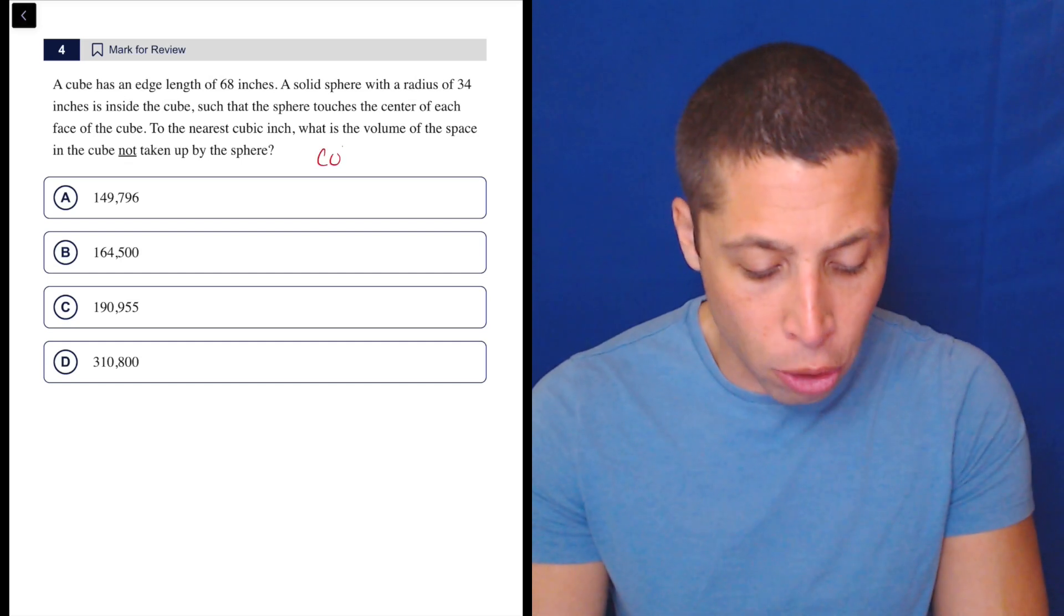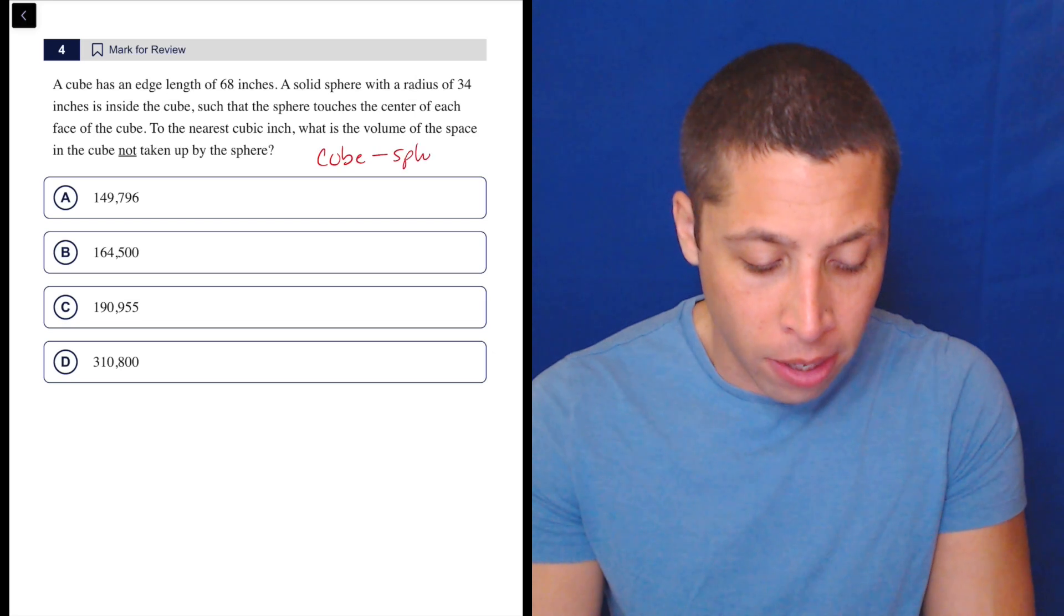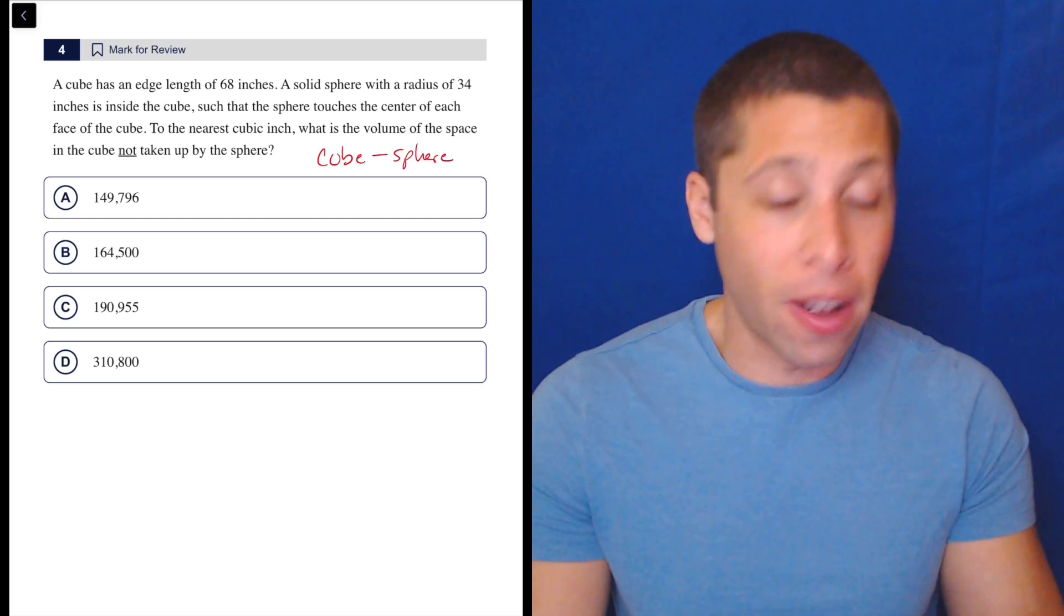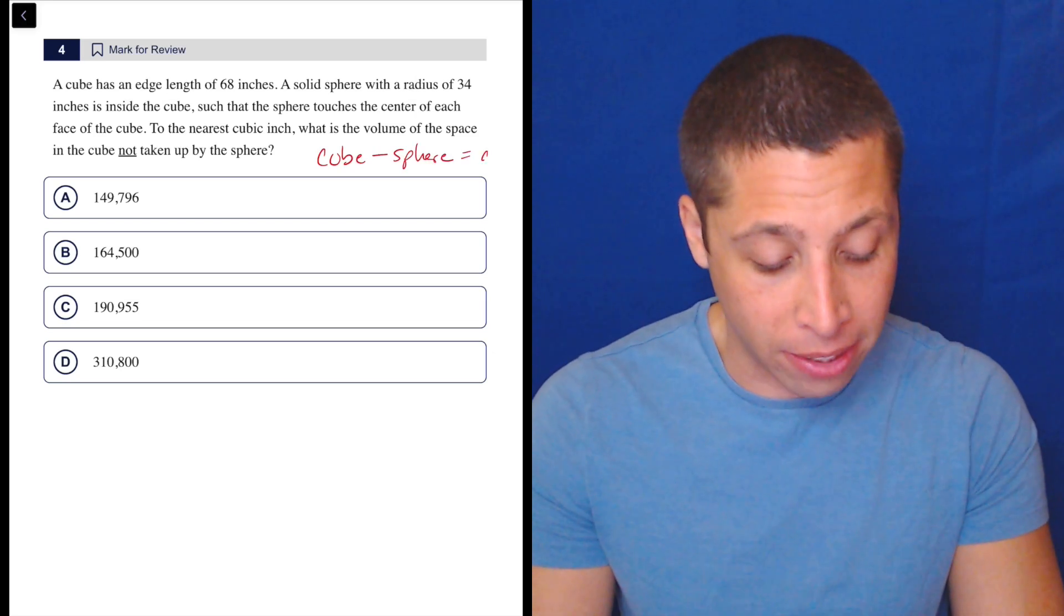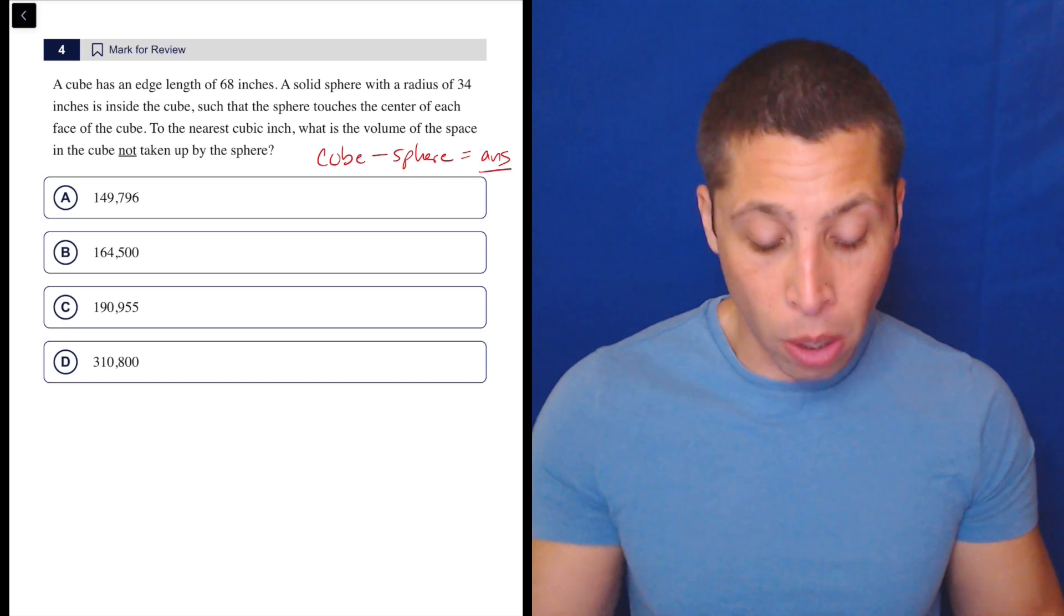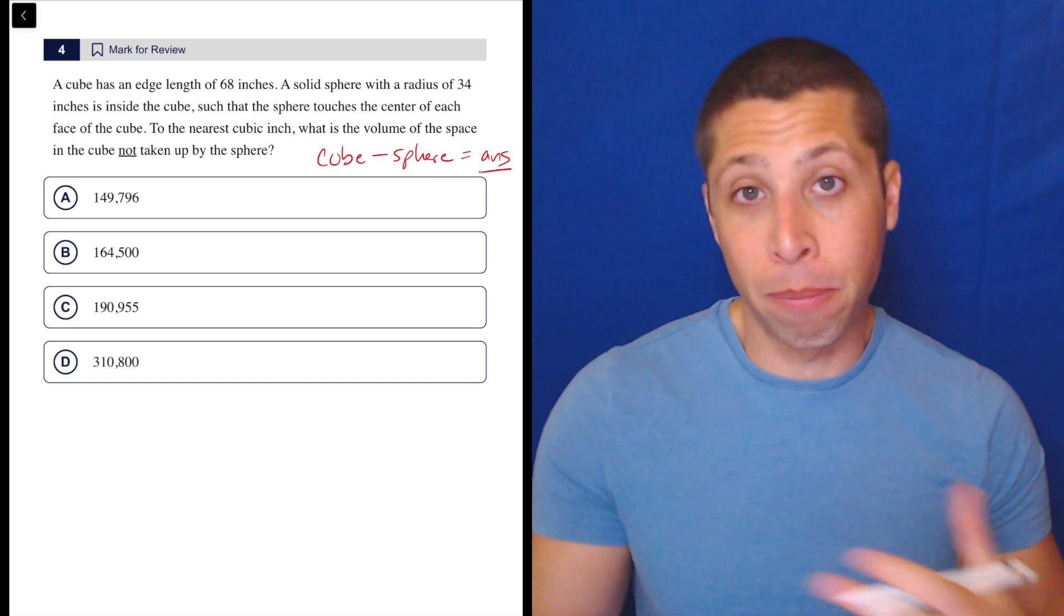So basically, we've got a cube and we've got a sphere. And if we take out the volume of the sphere, we're going to be left with basically our answer, whatever's left over. So that's pretty easy. Now we have a two-step problem, maybe three-step.